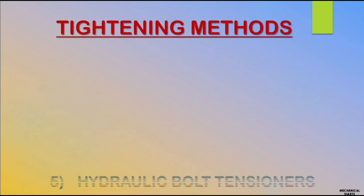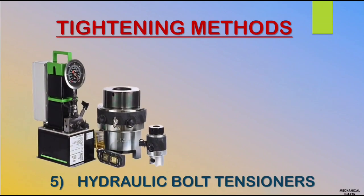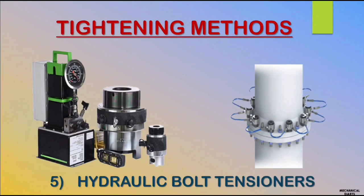The last method is hydraulic bolt tensioner, mostly used in all critical flanges. Bolt torquing and bolt tensioning are similar — both are used to seal leaks. Bolt torquing is a rotational force while bolt tensioning is a hydraulic load force. I cannot explain the full details of this bolt tightening method in this video as it is a very important chapter, so I will upload a separate video on torquing and tensioning in the future. Stay with Mechanical Diaries, and don't forget to subscribe and share with your friends.